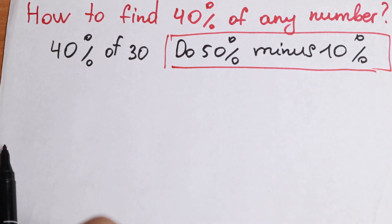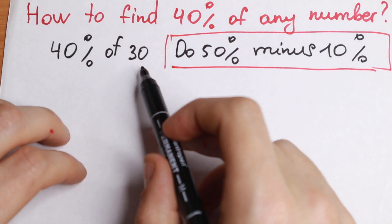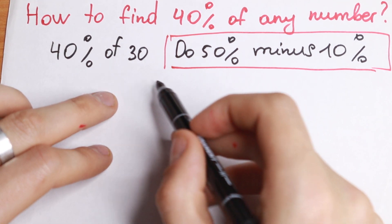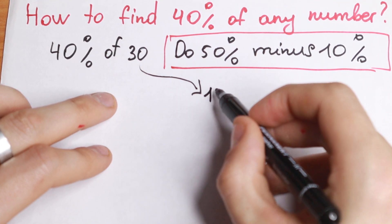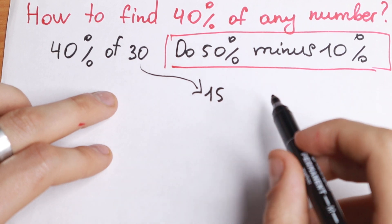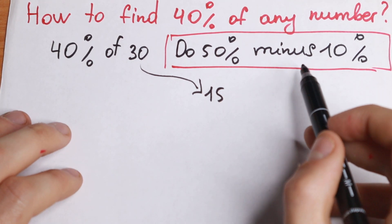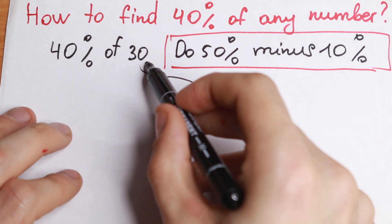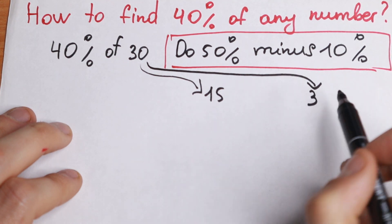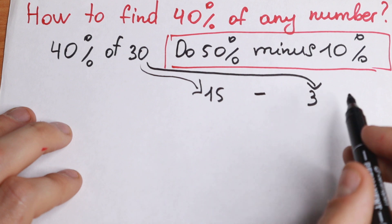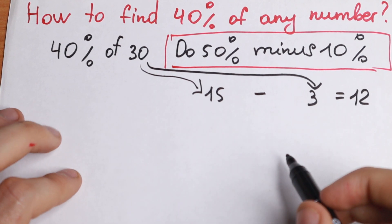So we need to do 50% and minus 10%. In our case we have 30. So 50% of 30 equals 15. And 10% of 30 — we just divide by 10 — so 10% equals 3. We subtract it and we get our answer: 12.